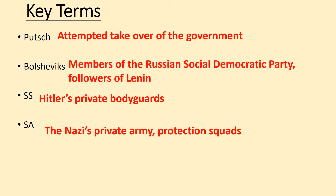We have four key words to know today. A Putsch is an attempted takeover of the government. Bolsheviks are members of the Russian Social Democratic Party — followers of Lenin, basically communists in Russia. The SS are Hitler's private bodyguards and the SA is the Nazis' private army. You need to know the difference between the two — the way to remember it is SA, A for army.